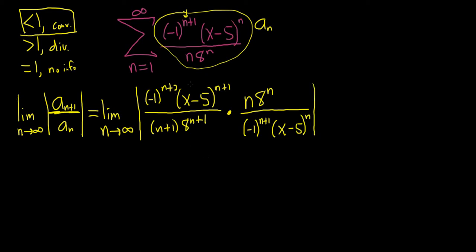There's some simplification that happens in the next step. First, note that all of the negative ones will always go away in these problems. The reason is: negative 1 to any power, say n+2, can either be 1 or negative 1. The absolute value of 1 is 1, and the absolute value of negative 1 is also 1. So in any case this equals 1, and they pretty much go away.